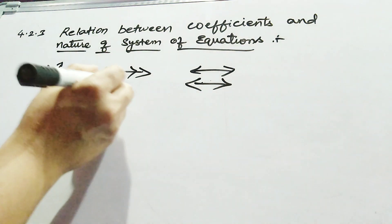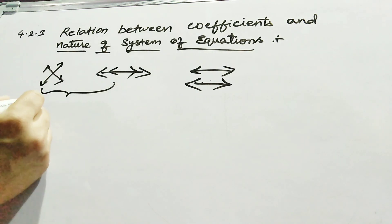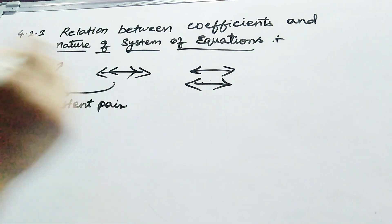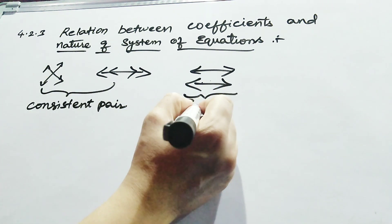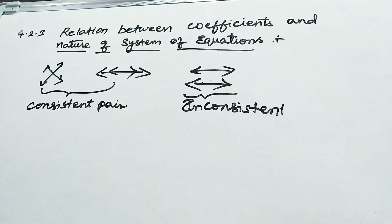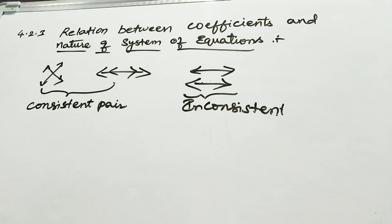Intersecting and coincident lines are called a consistent pair of linear equations, and parallel lines are called an inconsistent pair of linear equations. By seeing the equation — without drawing any graph — we have to say whether it has a unique solution, infinite solutions, or no solution, and whether it is a consistent or inconsistent pair of linear equations.